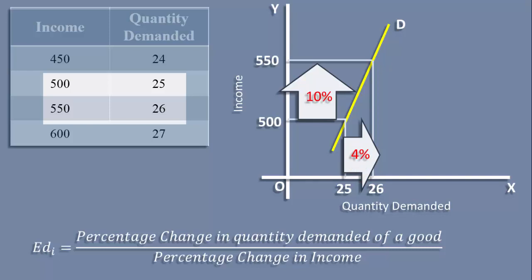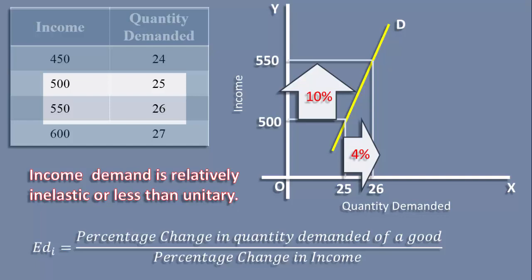There is a 10% increase in income, but the increase in quantity is only 4%. A proportionate increase in income results in a less than proportionate increase in quantity. Hence, income elasticity is less than unitary, or income demand is relatively inelastic.